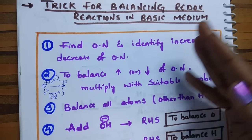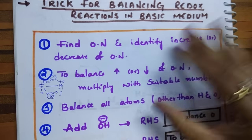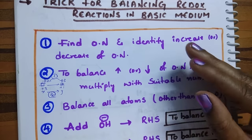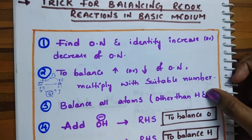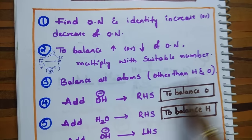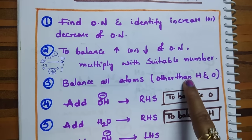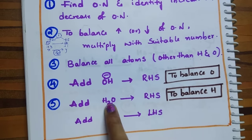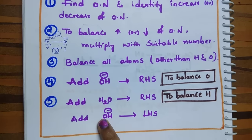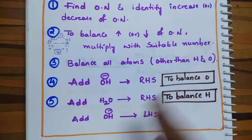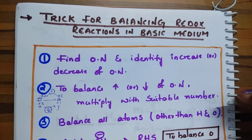Once again, to recap: first write the skeletal equation, then find the oxidation number and identify the increase or decrease. Next, multiply with a suitable number to balance the change. Then balance all atoms other than hydrogen and oxygen. For balancing oxygen, add OH⁻ ions to the deficient side. To balance hydrogen, add H₂O to the deficient side and add extra OH⁻ ions to the opposite side. Now let us take one example and balance that reaction.